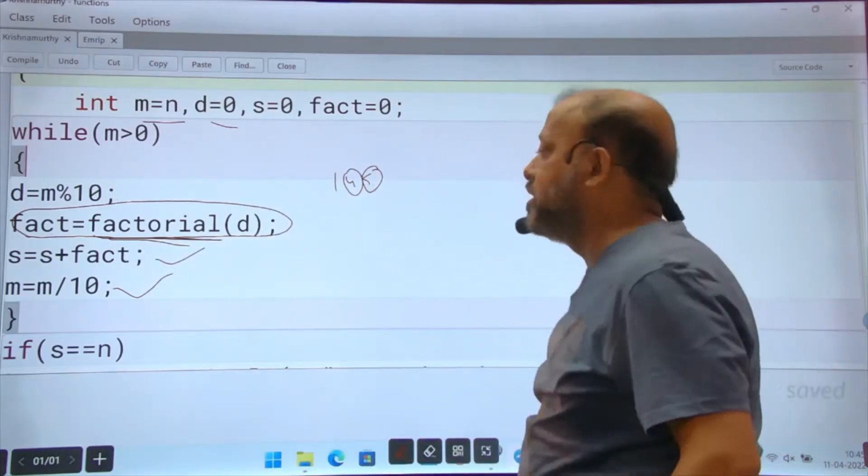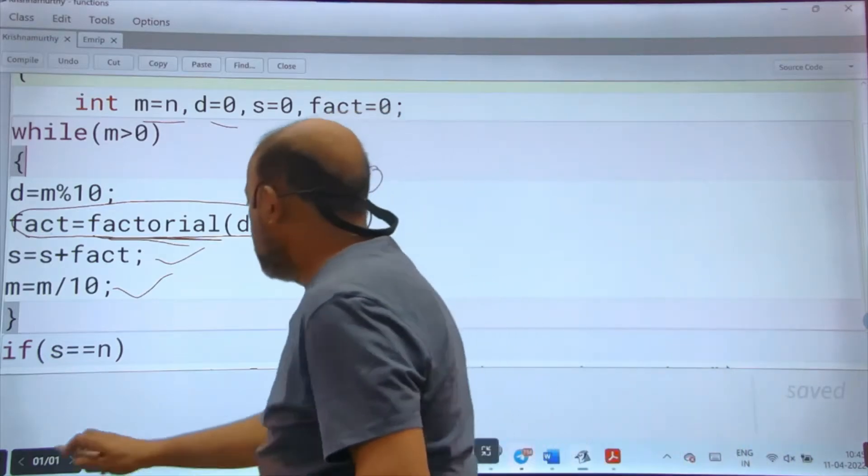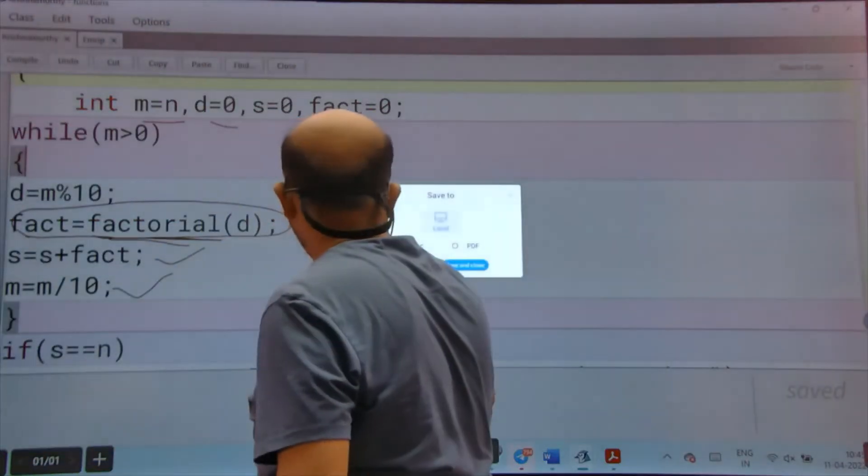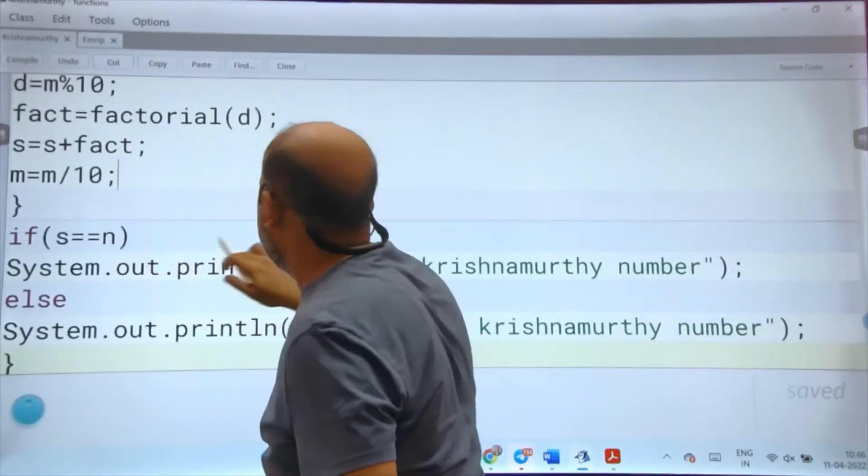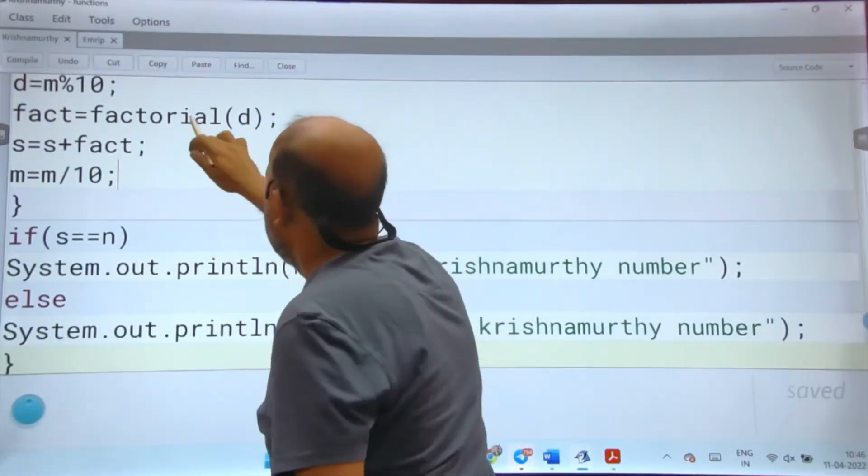At the end, checking if s equals n, so Krishna Murthy, else not. Now this factorial function, what is the change from last day?